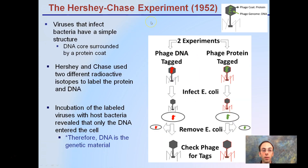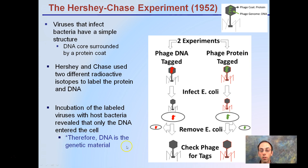In the Hershey-Chase experiment, viruses that infect bacteria have a simple structure: a DNA core surrounded by a protein coat. Hershey and Chase used two different radioactive isotopes to label the protein and DNA. They incubated the labeled viruses with host bacteria and revealed that only DNA entered the cell — therefore, DNA was considered the genetic material.